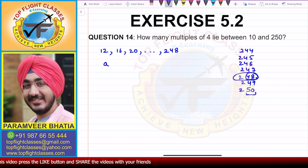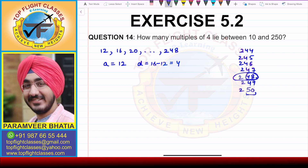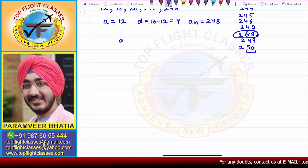Clearly, the first term a is 12. D, that is 16 minus 12, which is equal to 4. Since we need multiples of 4, the common difference d will be 4. The last term an is 248.